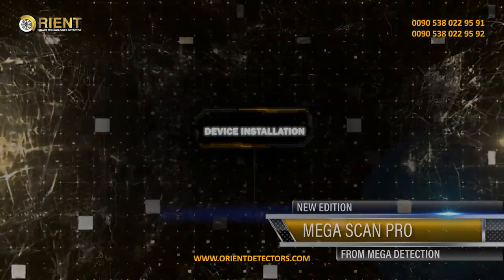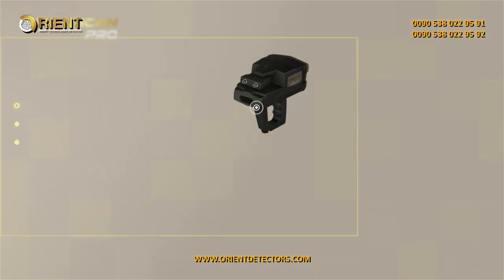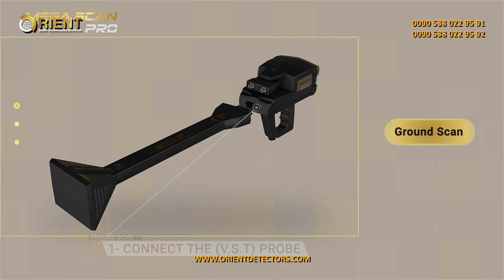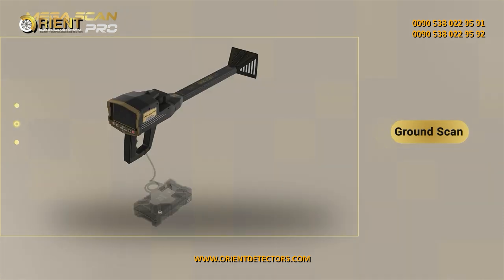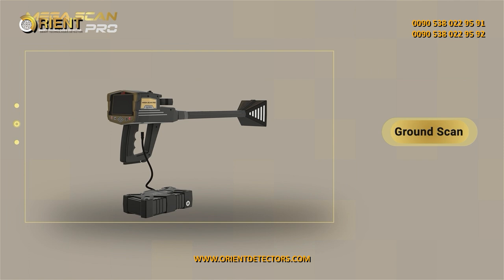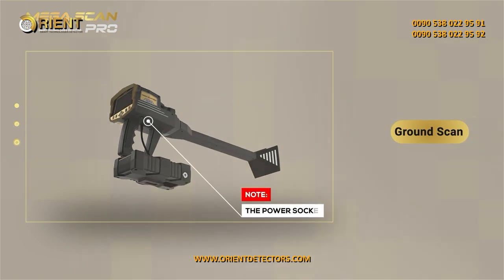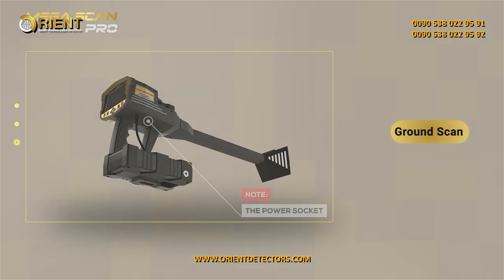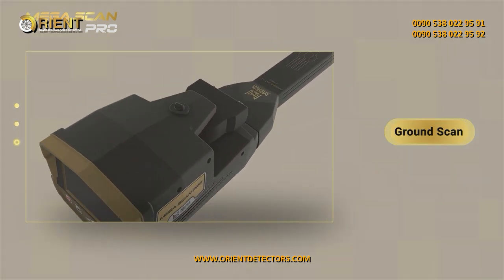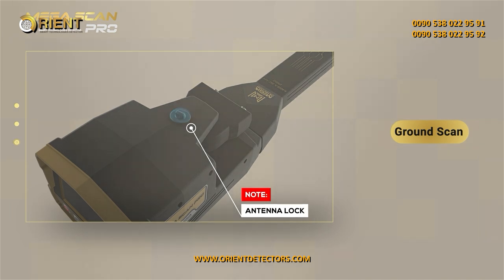Device Installation. Step 1: Connect the VST probe. Step 2: Use the power socket on the bottom of the main unit to connect the battery. Note: Ensure that the antenna's unit is locked and closed so that the unit is stable during use.